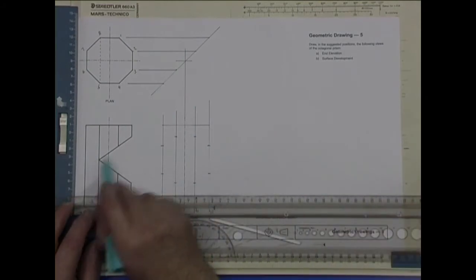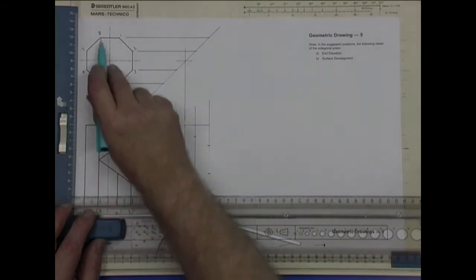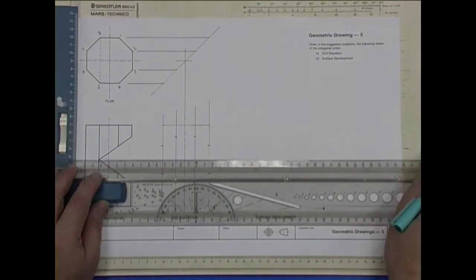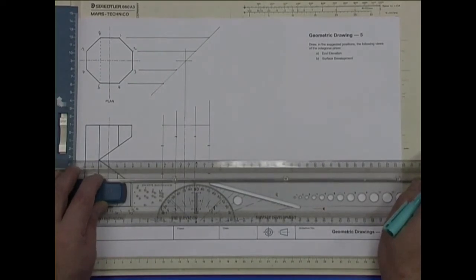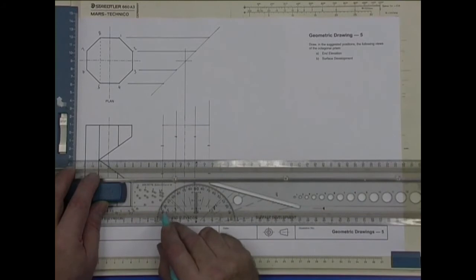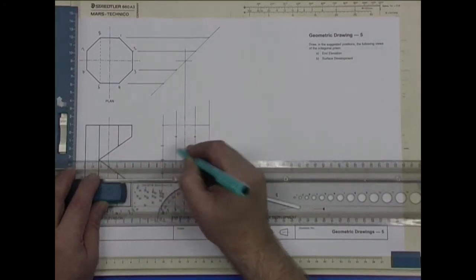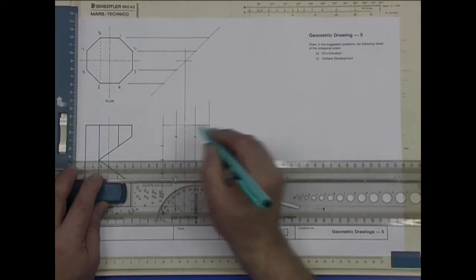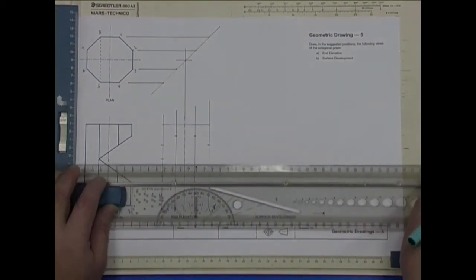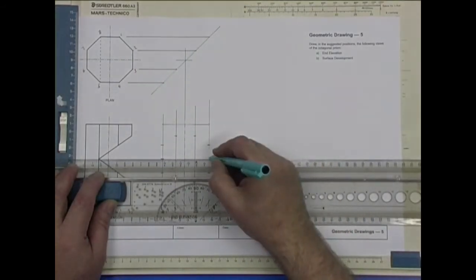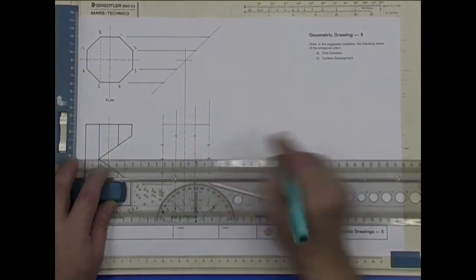And we're looking at this back point now. That just touches five and eight. So five and eight are behind four. So five is there. And eight is there.